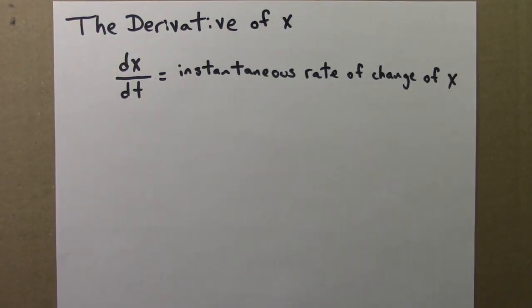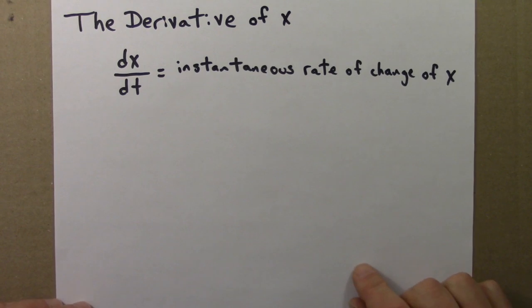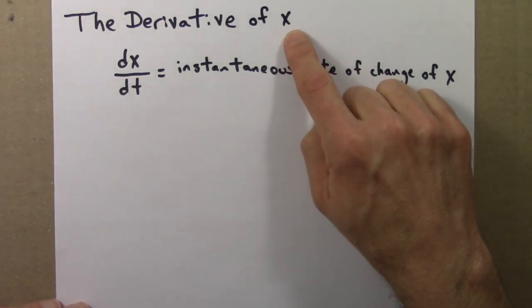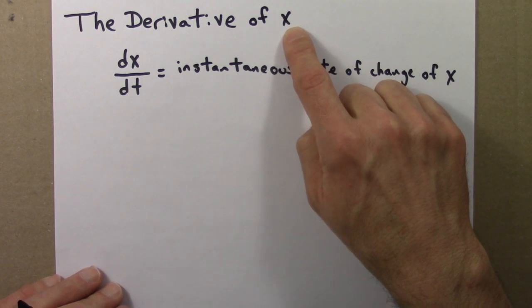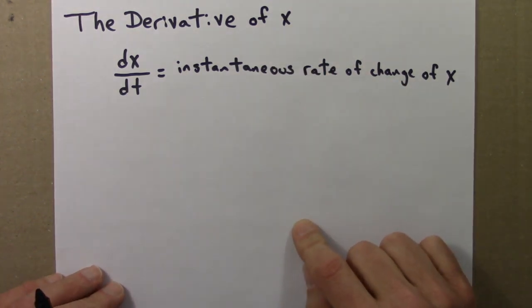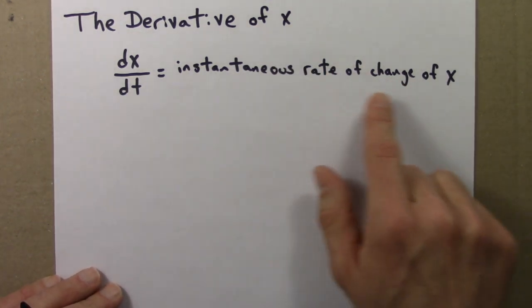So finally, and a little bit more generally, let's think about the derivative of x. Here, x could be any function that changes at all. This could be position, it could be temperature, it could be population. It's just some generic function that changes. And we could ask, how does it change instantaneously?